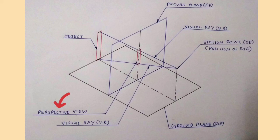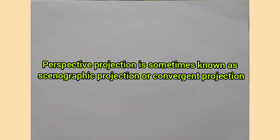The view of the object formed on the picture plane by the visual rays is called perspective view of the object. Perspective projection is also known as scenographic projection or convergent projection.